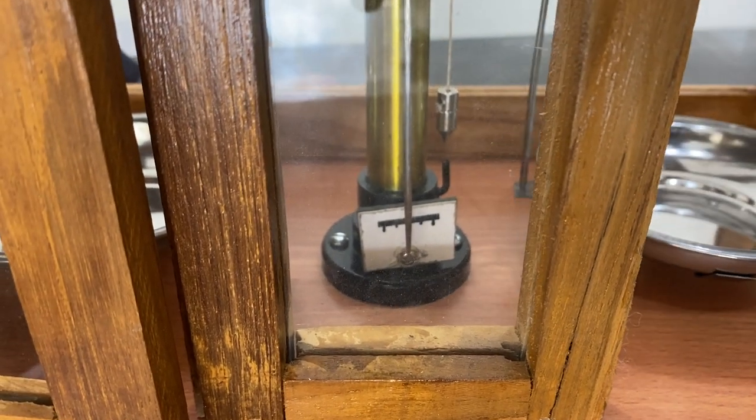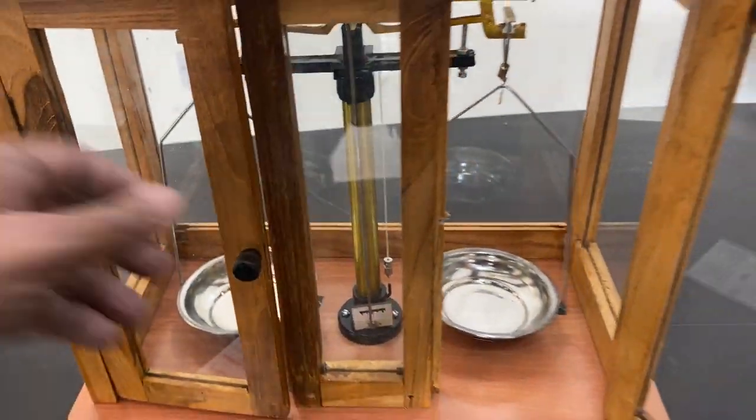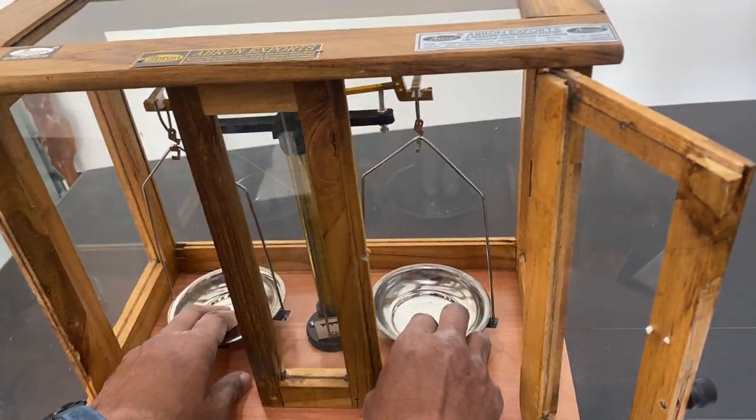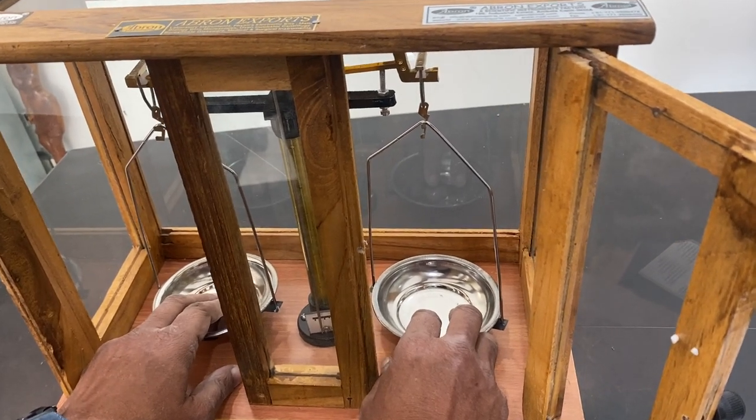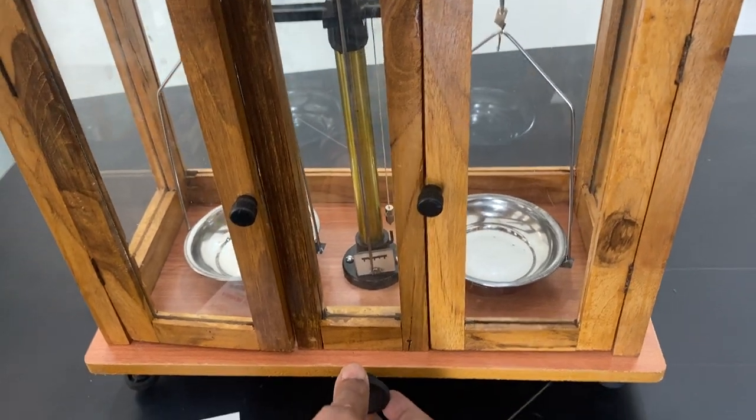Similarly, I move it on the back side as well so that it's exactly on top. Now the balance is ready to work. I stop this movement so there's no disturbance, and then when you lift it, it works.